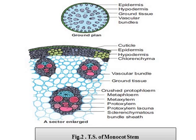Next, figure number 2 is showing the transverse section of monocot stem. First of all, epidermis is present as in the case of dicot stem; it is parenchymatous in nature. Cuticle deposition is also present to give protection to the plant, so it is also highly cutinized. An important feature is that epidermal hair is generally absent in monocot stem, whereas we have epidermal hairs in dicot plants.